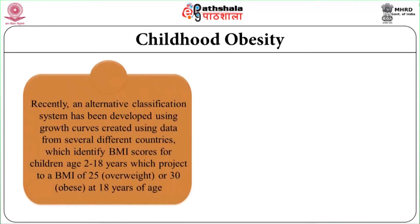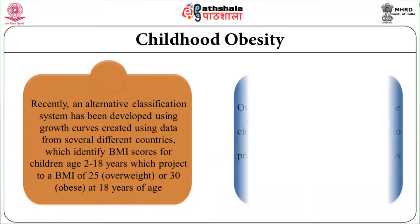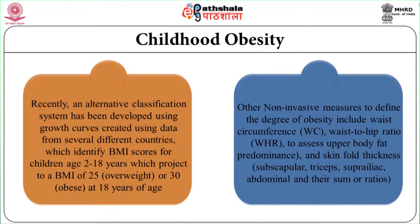Recently, an alternative classification system has been developed using growth curves created with data from several different countries, which identify BMI scores for children aged 2 to 18 years, in which a BMI of 25 indicates overweight and 30 indicates obese at 18 years of age. Other non-invasive measures to define the degree of obesity include waist circumference, waist-to-hip ratio to assess upper body fat predominance, and skinfold thickness — subscapular, triceps, suprailiac, abdominal — and their sum or ratios.